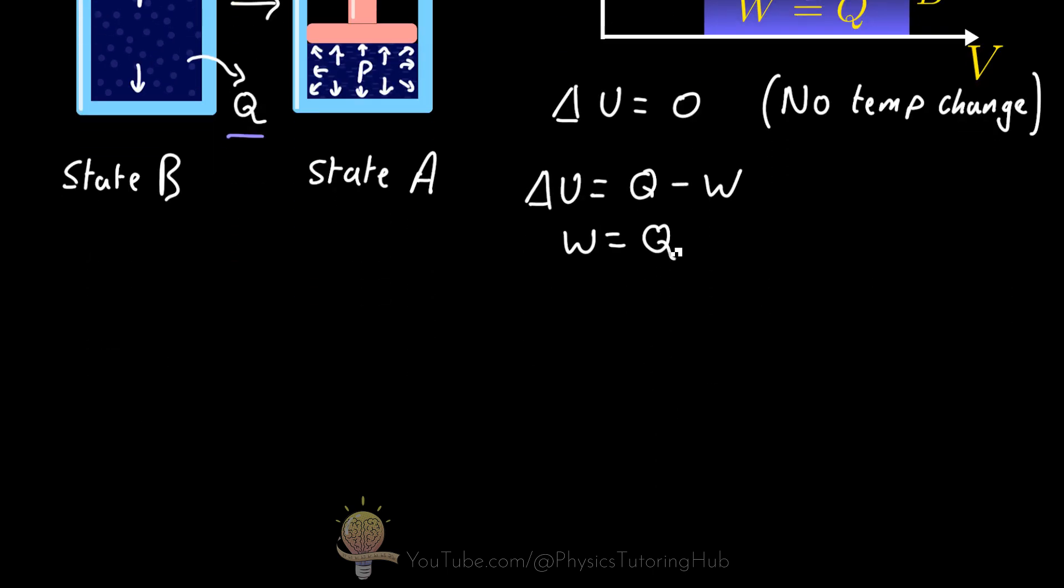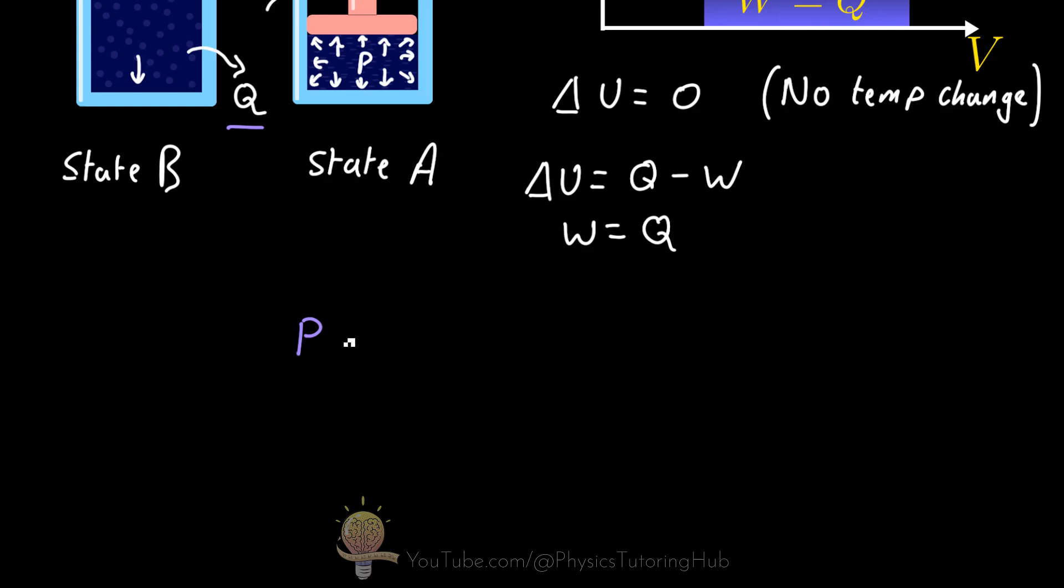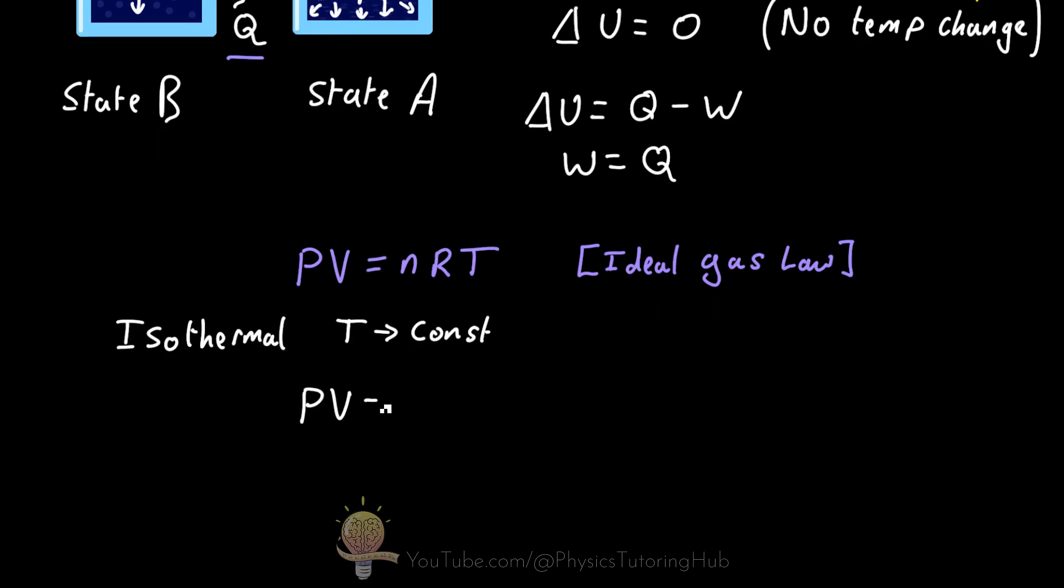Because we're using an ideal gas in our piston, the ideal gas equation applies to our problem here. When we apply the ideal gas law to isothermal conditions, the right hand side of this equation becomes constant because the temperature is constant. The temperature doesn't change in an isothermal process. And remember, we've got a closed system here, so the number of moles doesn't change and we have the universal gas constant, which doesn't change either.